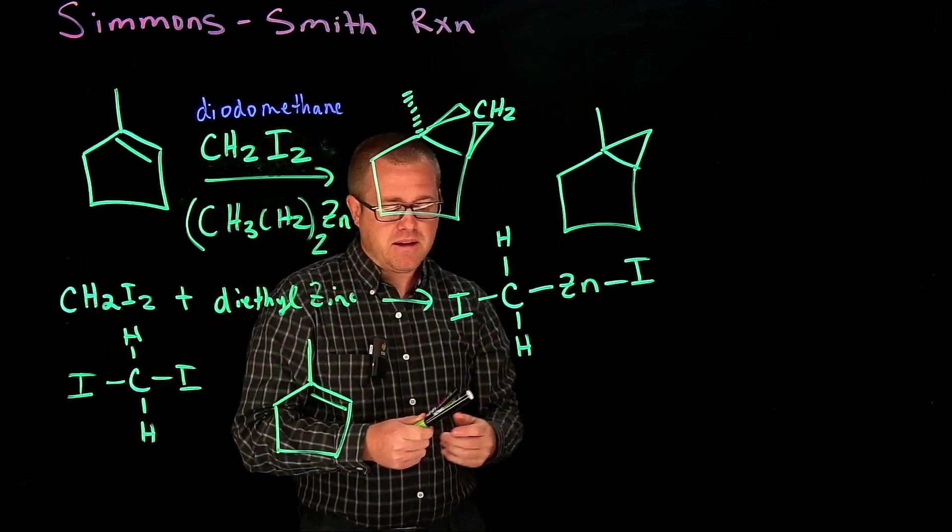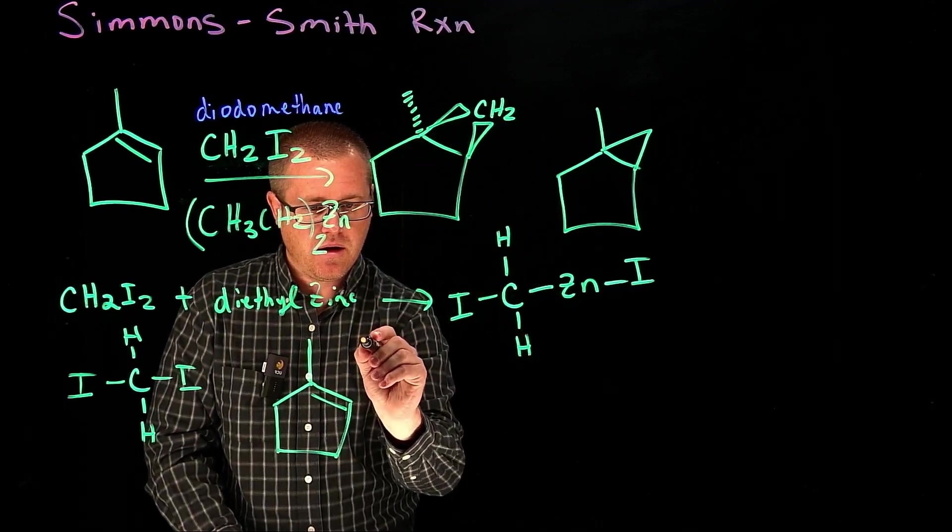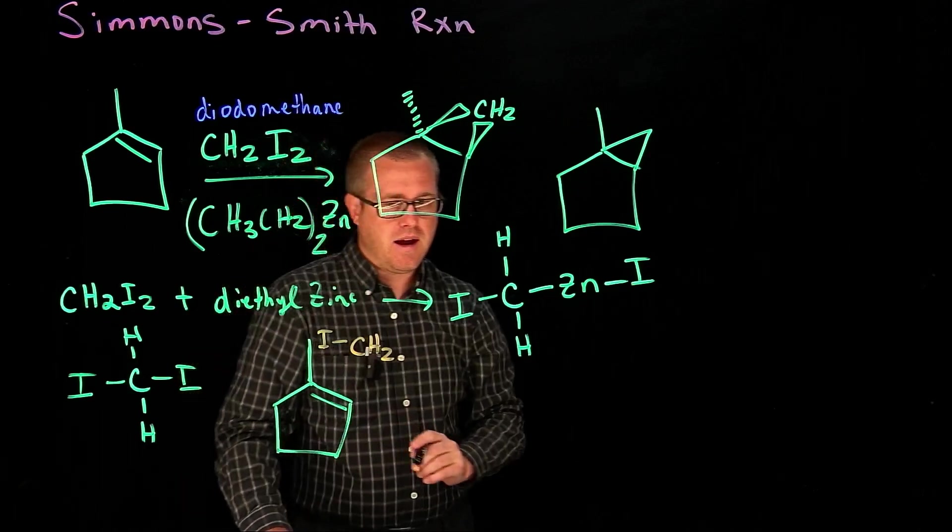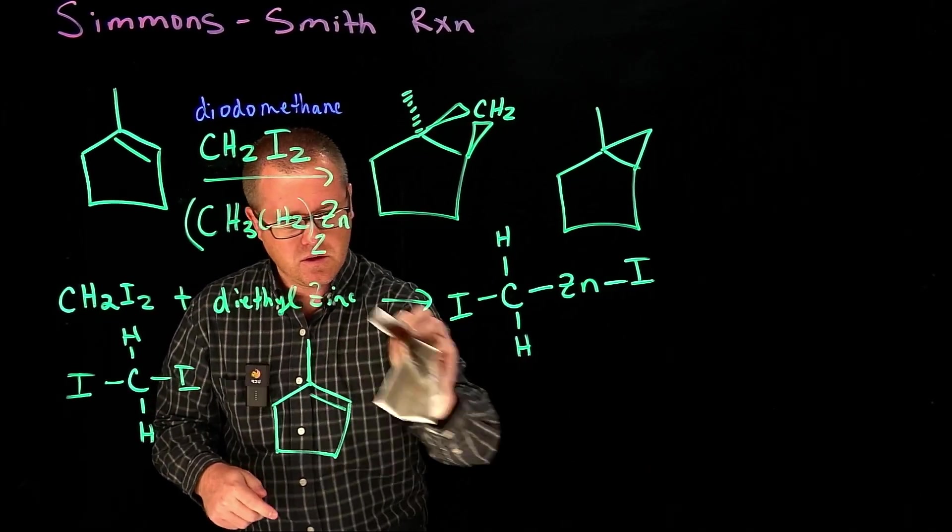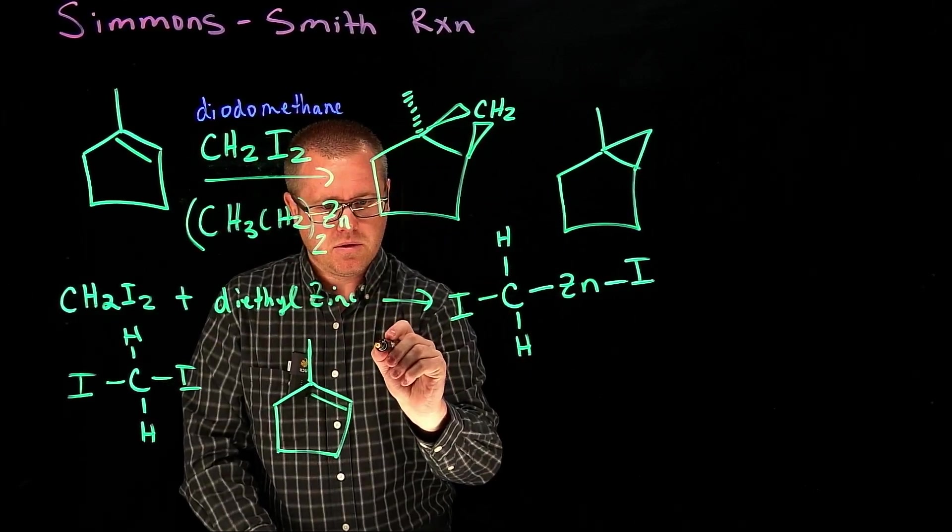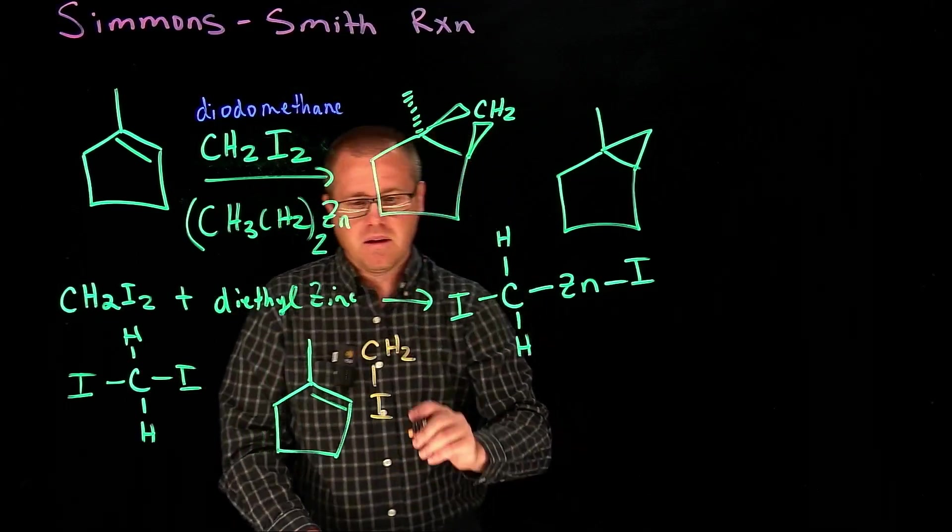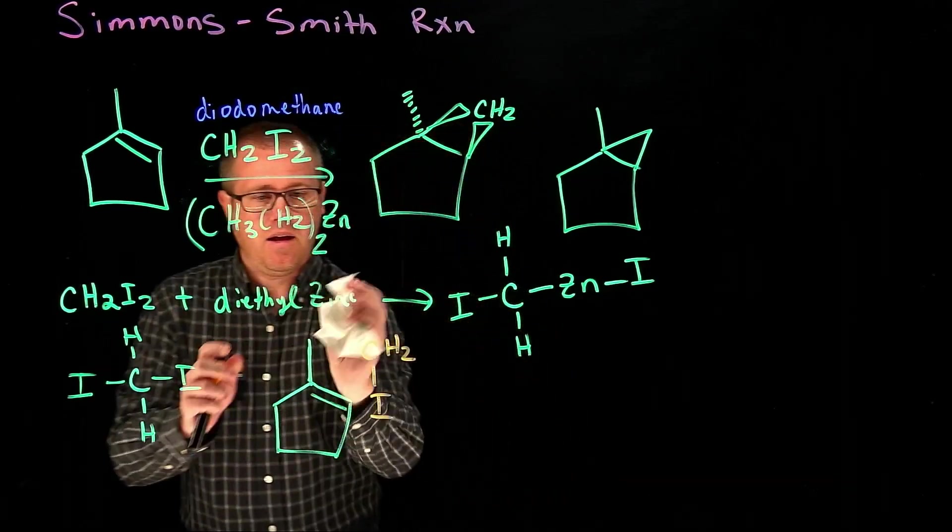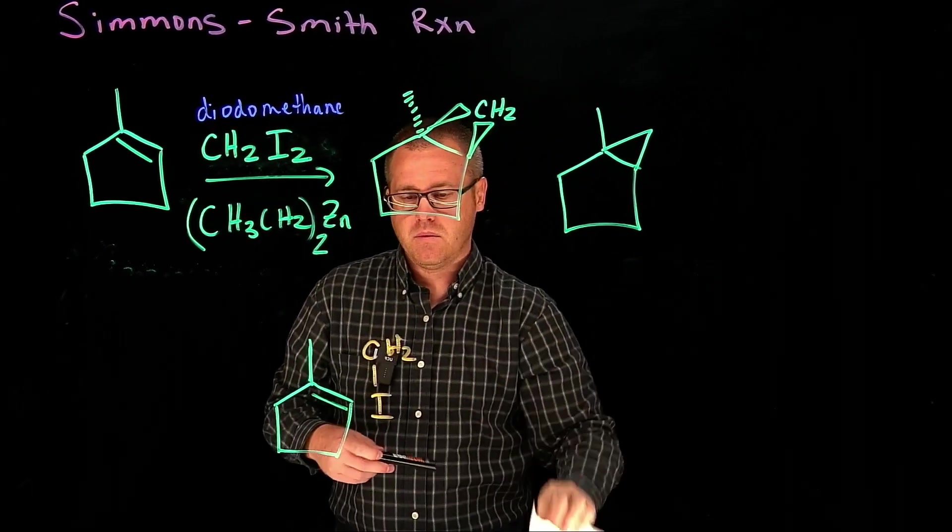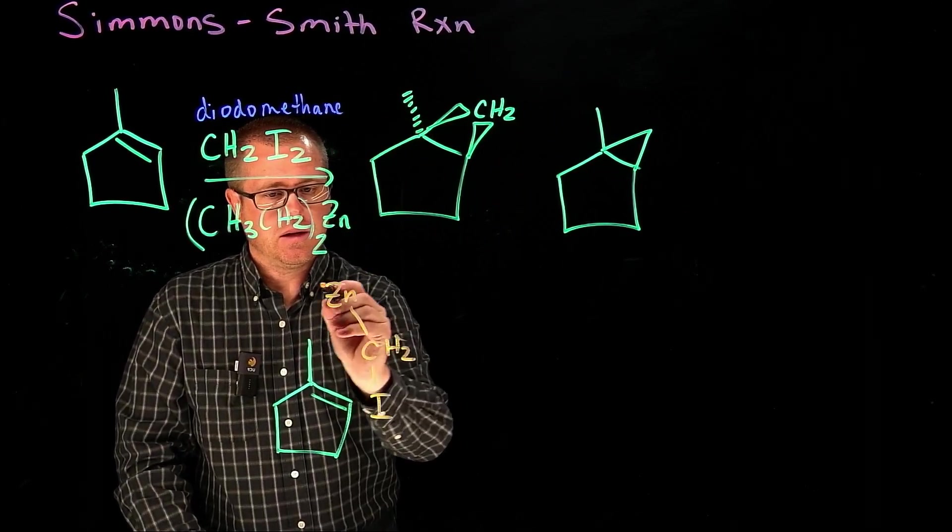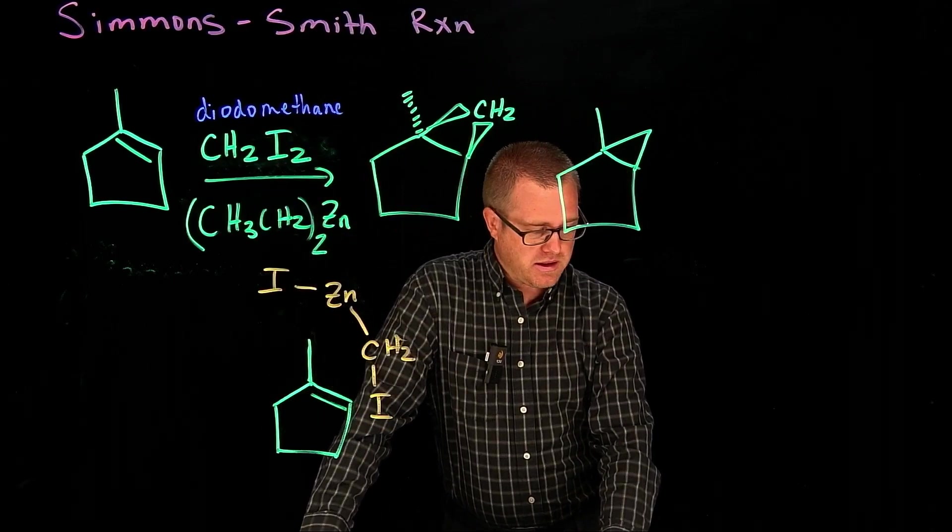And what's going to happen is we position the zinc like so. We'll put our CH2 here. I want to orient it a little bit different here. We'll do CH2 there. I need more board space. Let's give myself some more space. Zinc and then like that. So I've just taken our new zinc species there and look at this mechanism here.